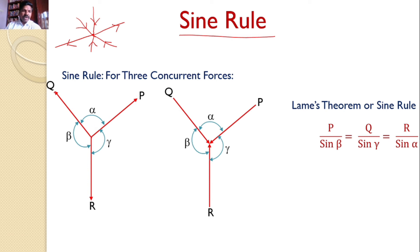Similarly, the force Q divided by sine of the angle between other two forces, P and R is constant, that means, Q by sine gamma is constant.